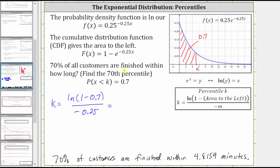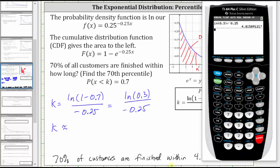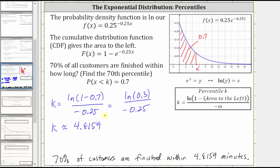Simplifying, we do get the same expression for k of natural log 0.3 divided by negative 0.25, which we already saw, does give us approximately 4.8159. So if your instructor lets you use the shortcut formula, it's obviously much faster than solving the equation algebraically.